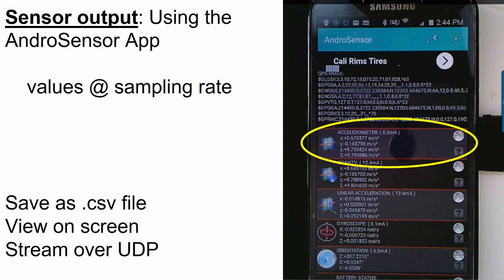If you want access to this data on your computer, there are two ways you can do it. You could save the data as a comma separated value file, and I'll show you what that looks like in a second. There's a lot of apps that will also let you stream the data over UDP.